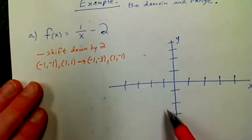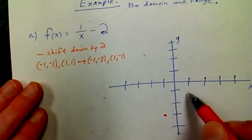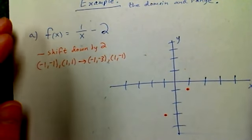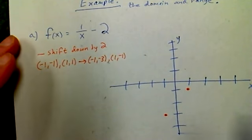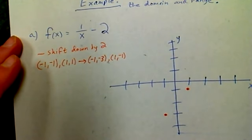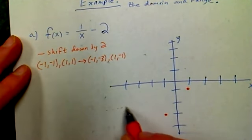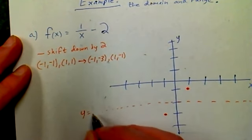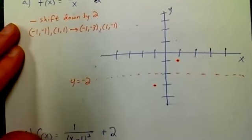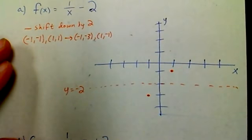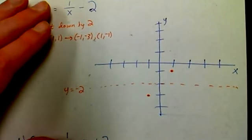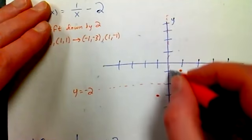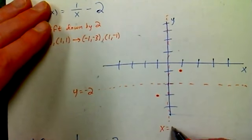Well if I shift down by 2, those points are going to go to negative 1, negative 3 and 1, negative 1. Also my horizontal asymptote had to shift down by 2. It used to be here at y equals 0, now it's right here at y equal to negative 2. Question is, what happened to the vertical asymptote? Well that didn't change because we just shifted down, so I still have a vertical asymptote of x equal to 0.